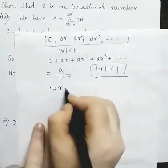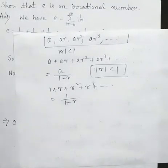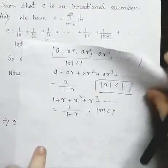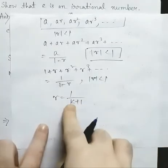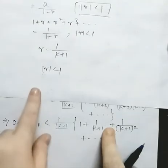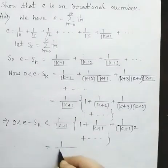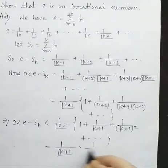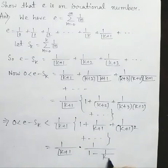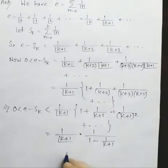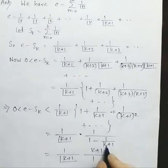Putting a equal to 1, then 1 plus r plus r squared plus r cubed plus dot dot equals 1 by 1 minus r, where modulus of r is less than 1. Comparing with our expression, here r equals 1 by k plus 1, which is clearly less than 1, so modulus of r is less than 1. Therefore the sum equals 1 by 1 minus 1 by k plus 1, which simplifies to k plus 1 by k.